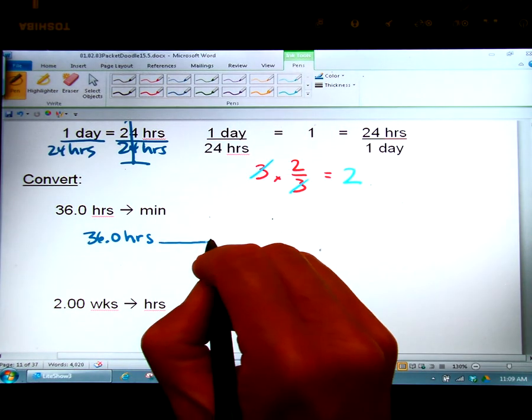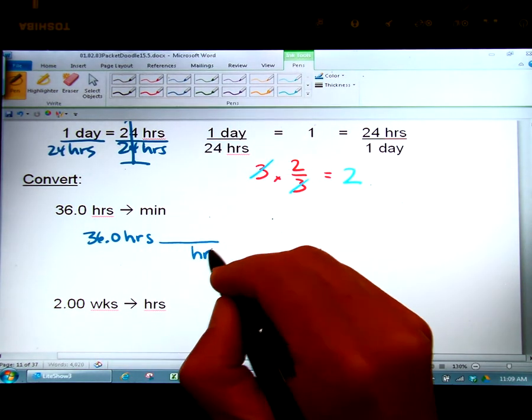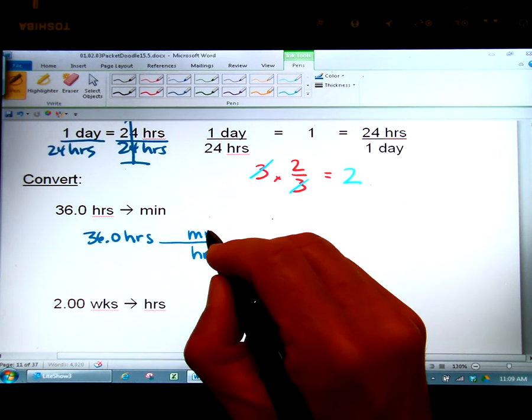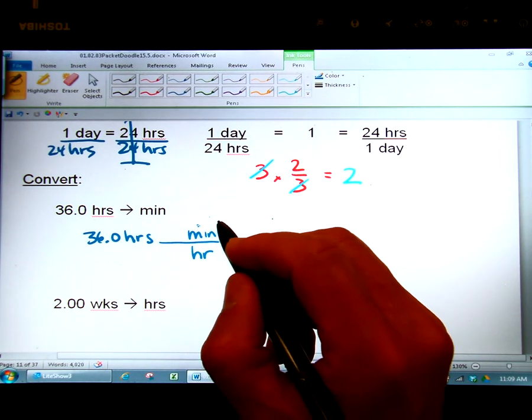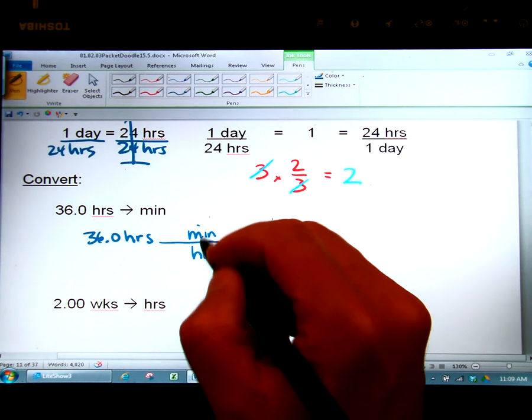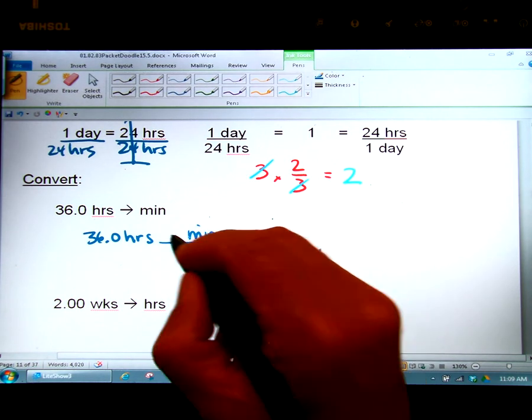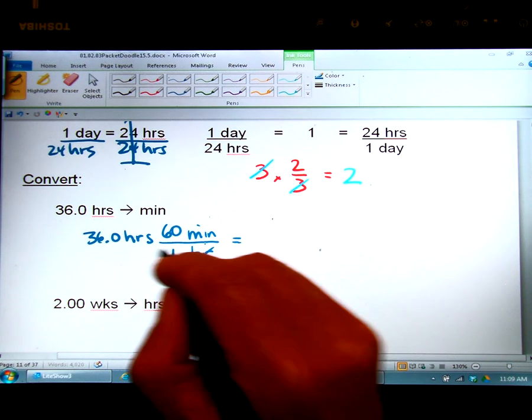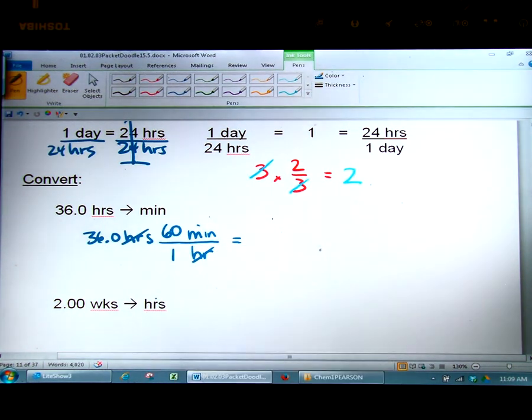So I want to eliminate hours. So I need to put it on the bottom so eventually it will divide out. Now I want to change it into minutes so I can put minutes up here. And when I do that I have to ask myself what is the relationship between minutes and hours? And I know that there are 60 minutes in one hour. So now when I divide out the hours I'm going to be left with minutes.